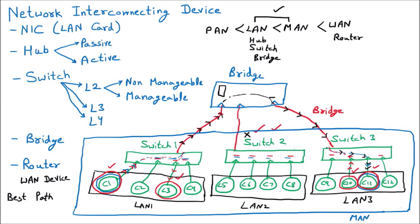Let us assume that this is the MAN of Delhi — the Delhi network — in which we are having a bridge, and in this bridge we are having multiple switches. There can be multiple bridges also, but I am assuming one bridge with multiple switches connected. This is the metropolitan area of Delhi.